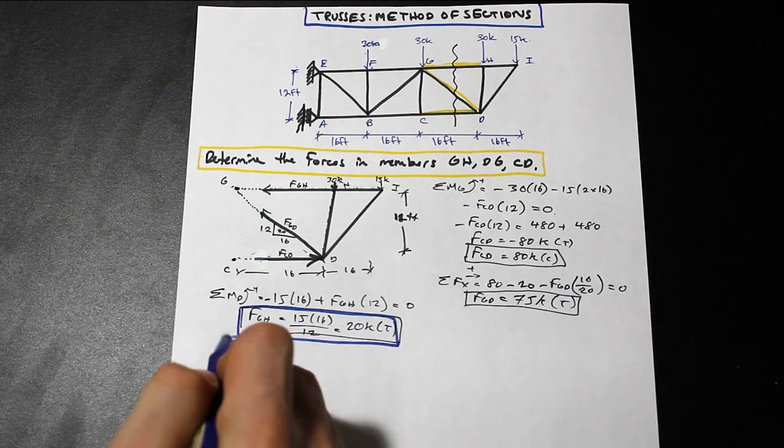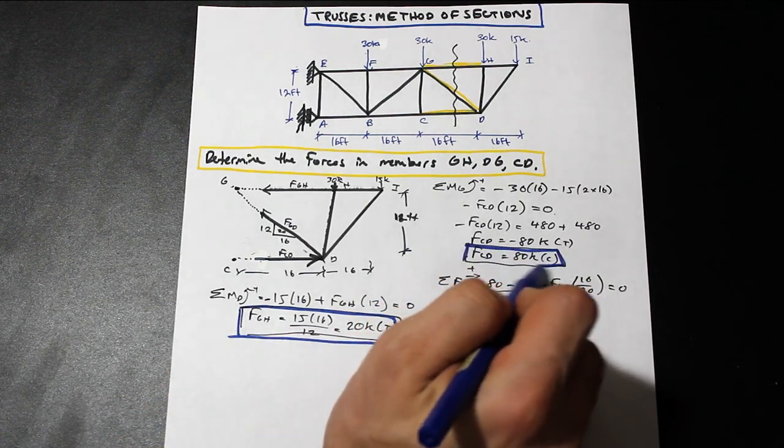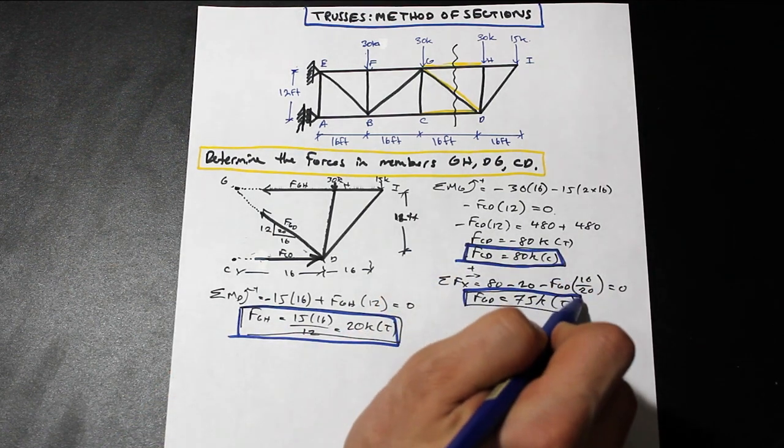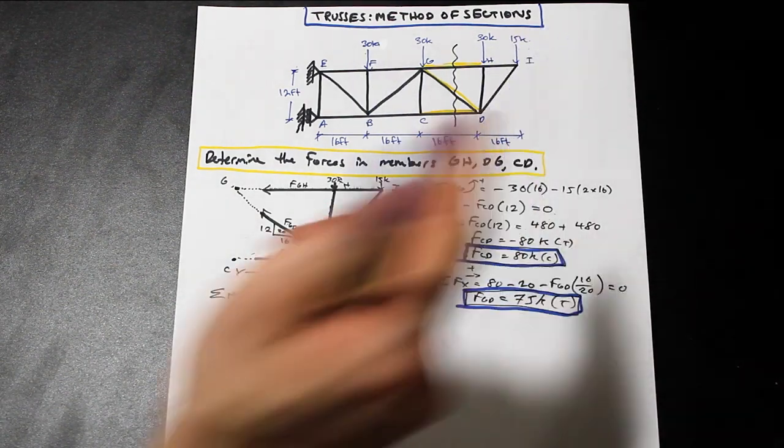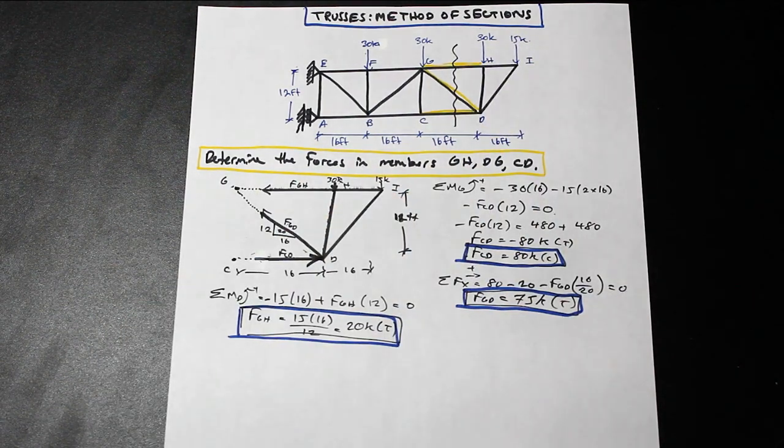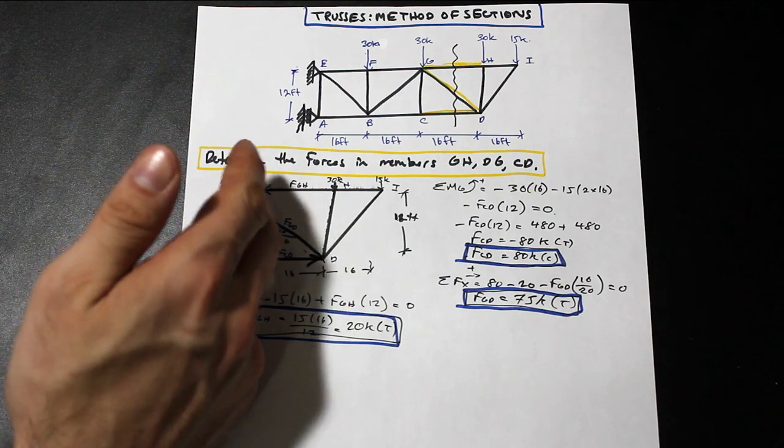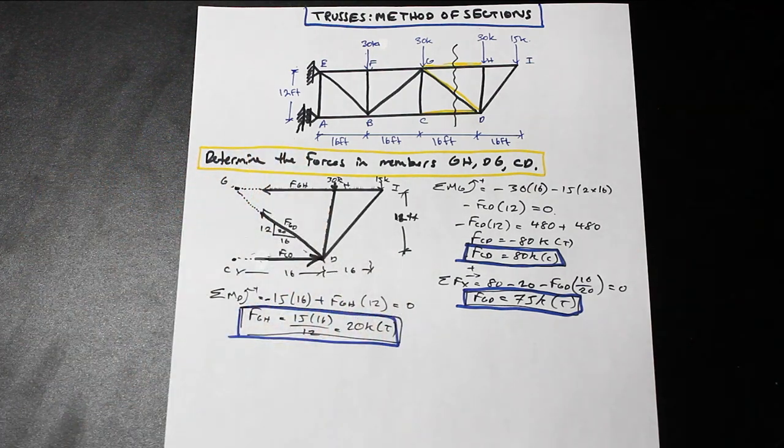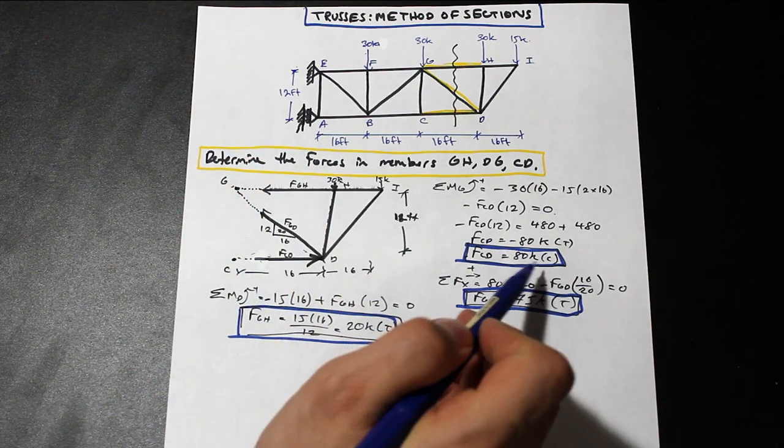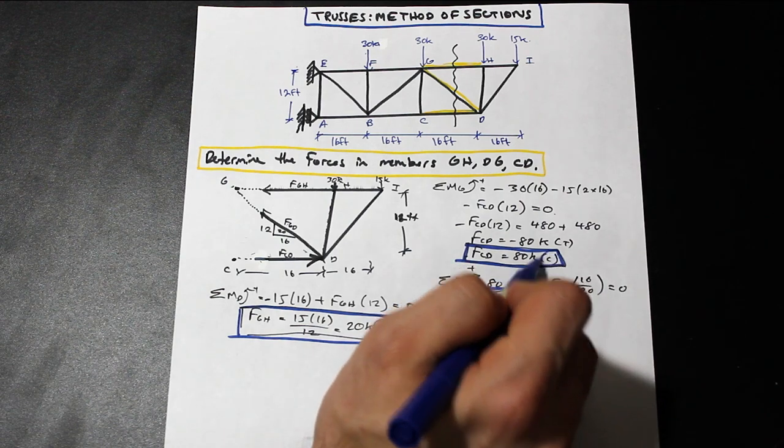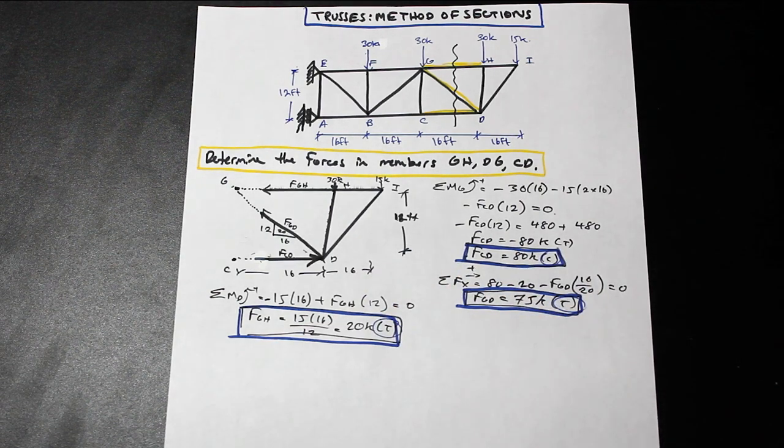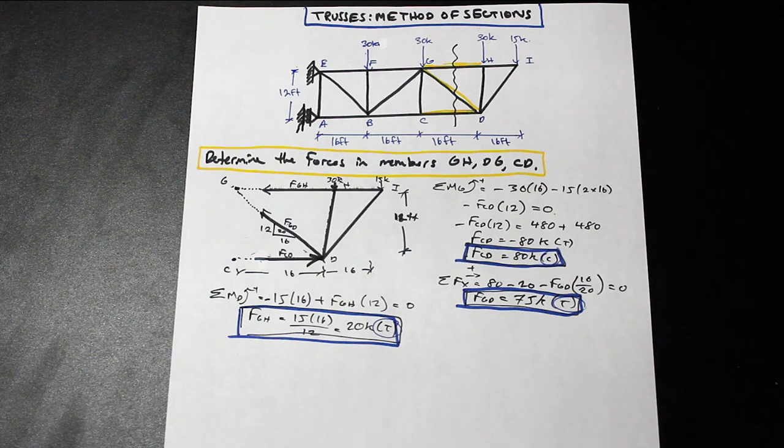So what did we do here? Well, we found the internal forces in FGH, FDG, and FCD. And we did that by taking the moments about G, about D, and then we took the sum of the forces in X. And we made sure that we showed whether they were in tension or compression. Very, very important. The things to take away from here, guys, watch your sign convention. Make sure your positives and negatives are correct. And I like to edit the directions if you find that they're different.